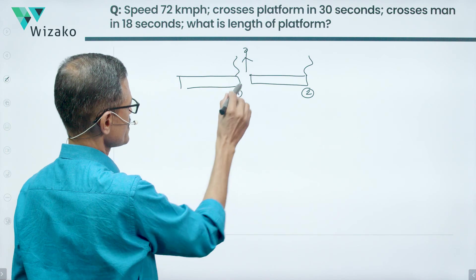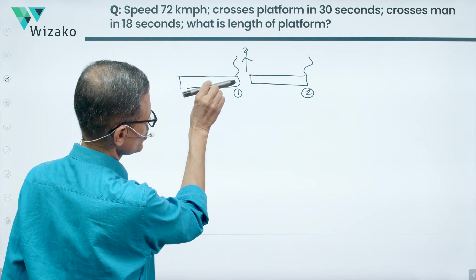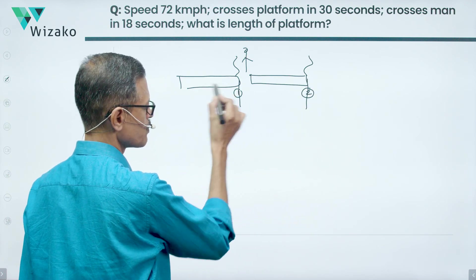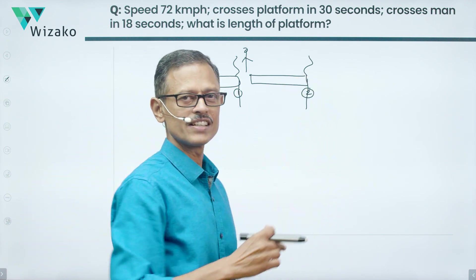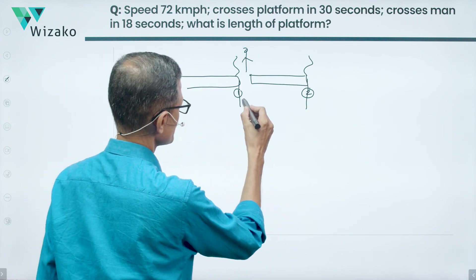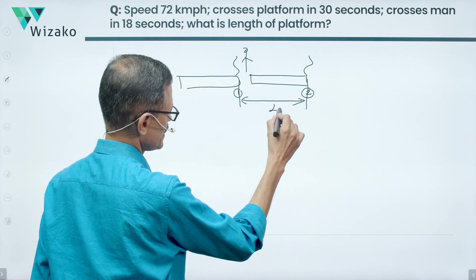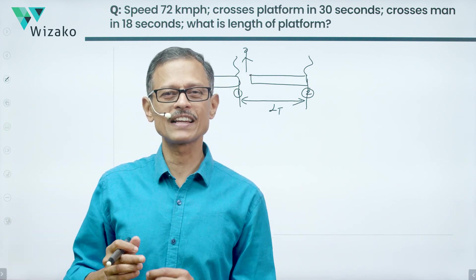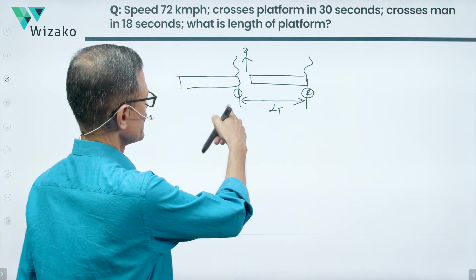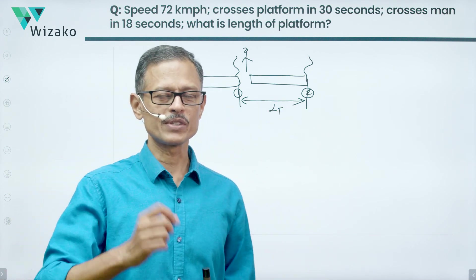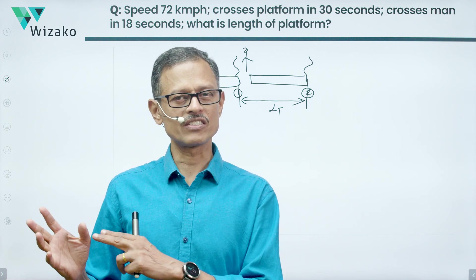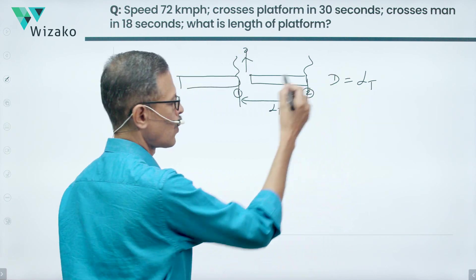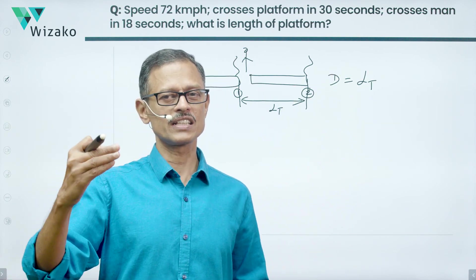In such a scenario, the distance traveled by the train — from when the engine is just about to cross the man to when it has completely passed him — equals the length of the train plus the width of the man. Since the man's width is insignificant, we take it as zero. So the distance traveled by the train when crossing a stationary object of negligible length is simply the length of the train.